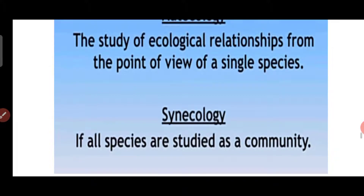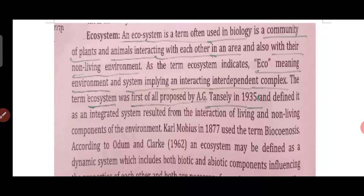Now we have the ecosystem. What is an ecosystem? In biology, a community consists of plant species and animal species. There is an interrelationship between plants and animals — they interact and interrelate with each other in a particular area. This community and its relationships in a particular area is what we call an ecosystem.